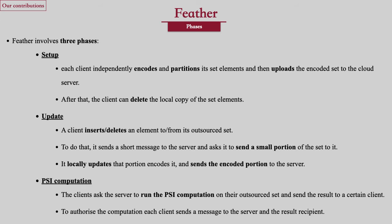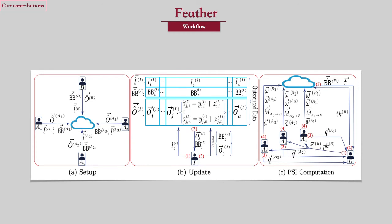When the client receives that portion, it locally updates it, then encodes that portion and sends the encoded portion to the server. In the PSI computation phase, a collection of clients ask the server to run the PSI computation on their outsourced data and send the result to a designated client. To authorize the computation, each client sends a message to the server and to the client who is supposed to receive the result.